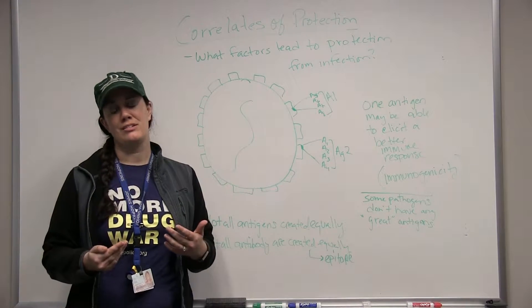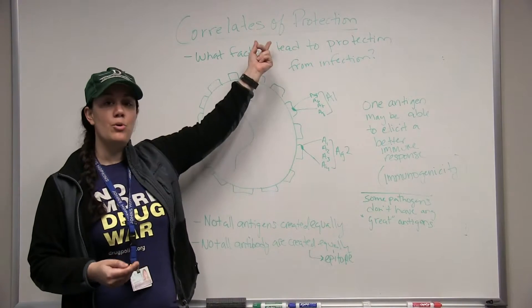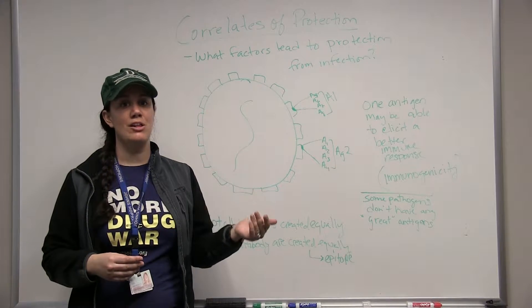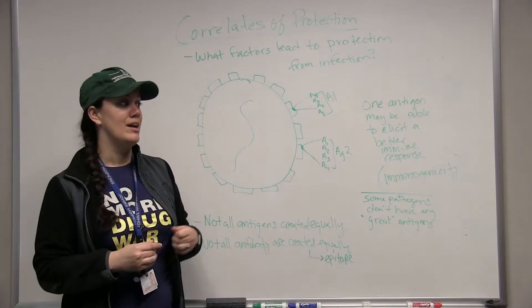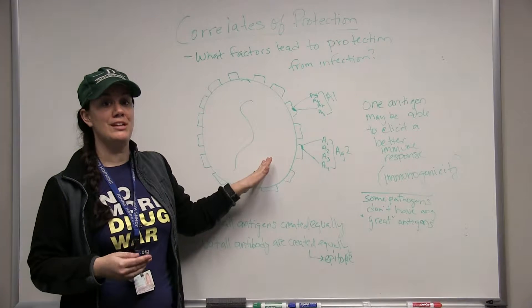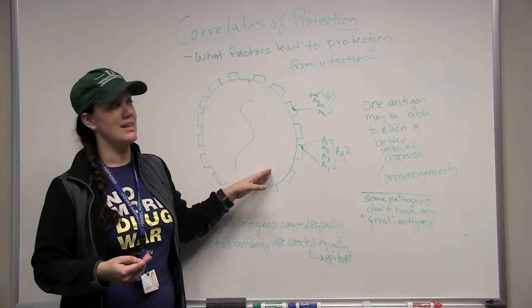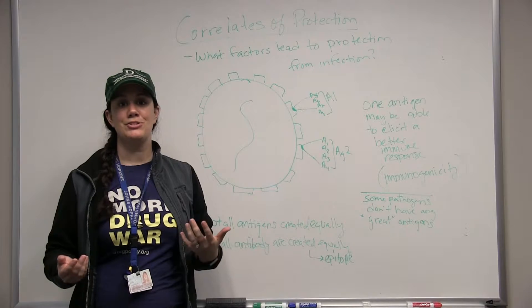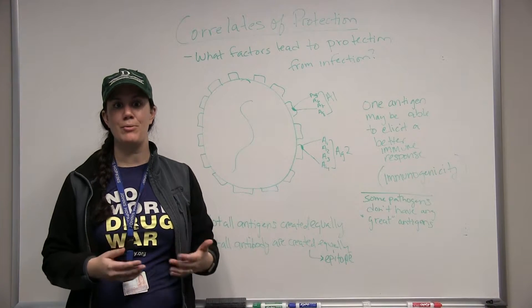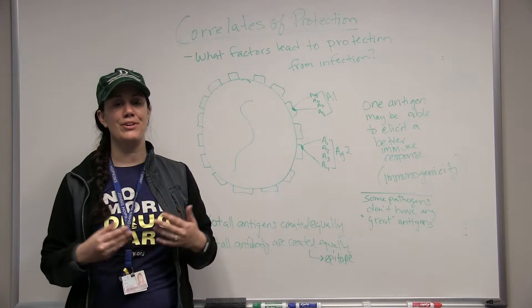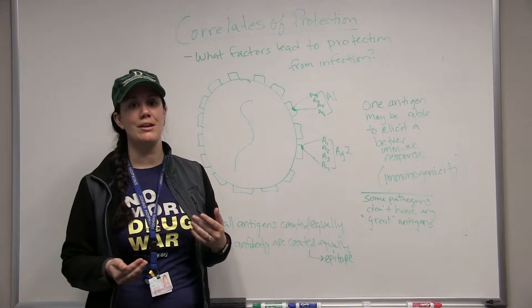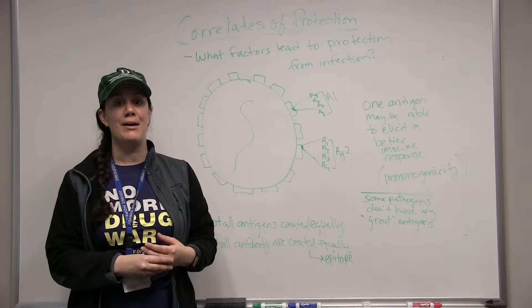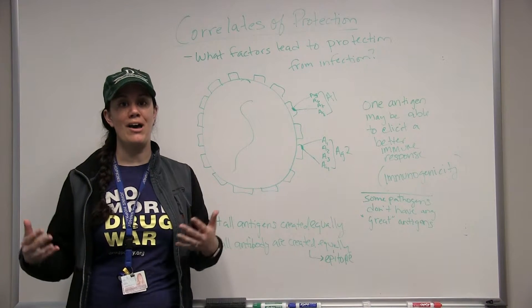The other difficulty in getting a working vaccine is what we call correlates of protection, really knowing what factors are going to build a long-term memory response and also that's going to get rid very efficiently of the specific pathogen for that vaccine. These are factors that lead to protection from infection, and this is actually a trial and error process. In public health we really ask does it work and if so great, let's use it, but really on the science side of things we don't know how these things work.